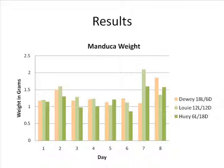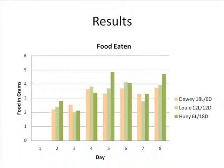In looking at the graph, we can see that the overall weight went up across the board, as expected. Due to some anomalies, it was difficult to observe any trends in the weight of the Manduca. However, in the end, the heaviest Manduca was Dewey, the 18 hours of light and 6 hours of dark subject.